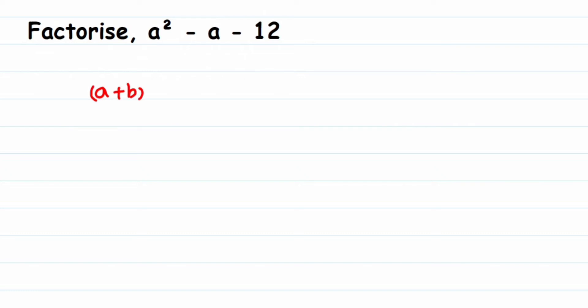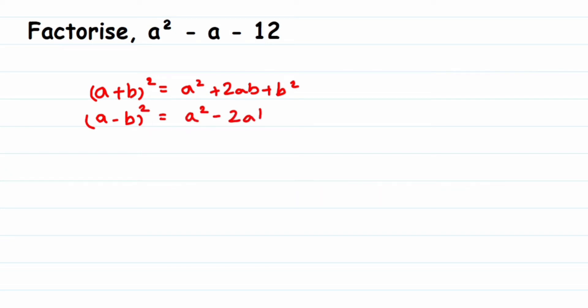In eighth class you might have learned some identities like a plus b whole square and a minus b whole square. Let me write them down again. We know that a plus b whole square is a squared plus 2ab plus b squared. Similarly, a minus b whole square is a squared minus 2ab plus b squared.